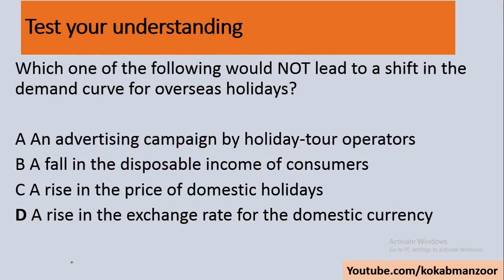Practice question: which of the following would NOT lead to a shift in the demand curve for overseas holidays? Focus on the word 'not.' The options are: an advertisement campaign by holiday tour operators, a rise in foreign disposable income, a rise in the price of domestic holidays, or a rise in the exchange rate of the domestic currency. The last option — a rise in the exchange rate — may not be the cause of the shift, so D is the correct answer.